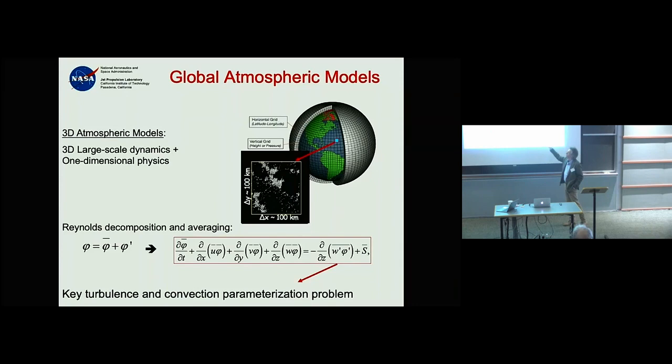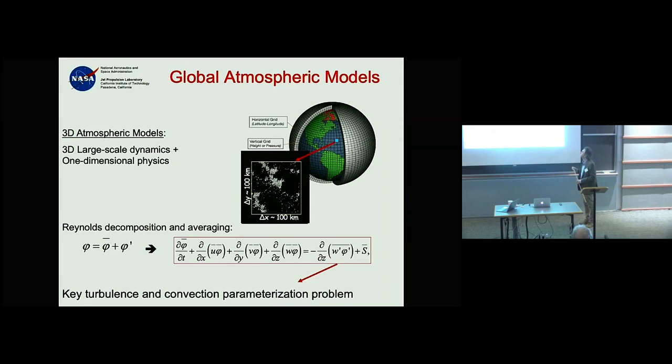But the grid boxes in a general circulation model today are between 50 and 100 kilometers for global climate models. For global weather prediction it's better — ECMWF is at 9 km — but not finer than that.